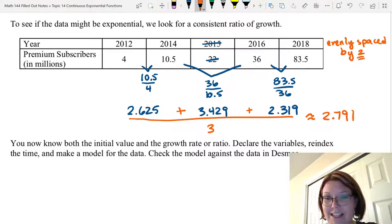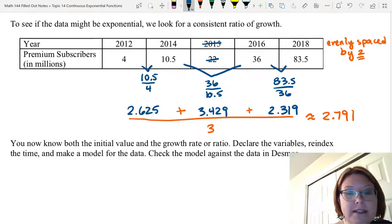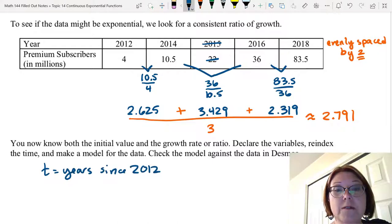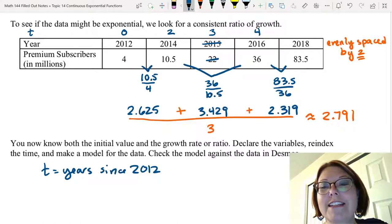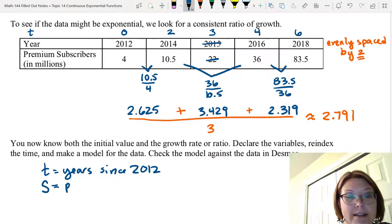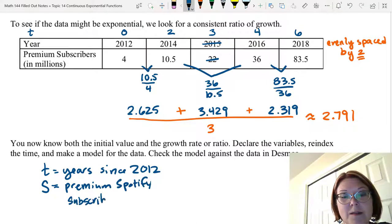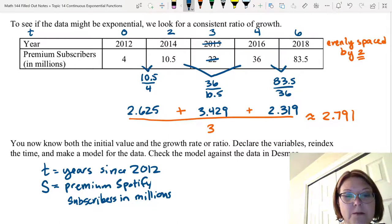So our guess is that this is exponential. It's definitely not linear. Let's go ahead and declare the variables. Let's let T be the year since 2012. So 2012 is year 0, 2014 is year 2, 2015 would be year 3, 2016 year 4, and 2018 year 6. Let's use a capital S for the premium Spotify subscribers in millions. We know the initial value at t equals zero. That lowercase a is four.